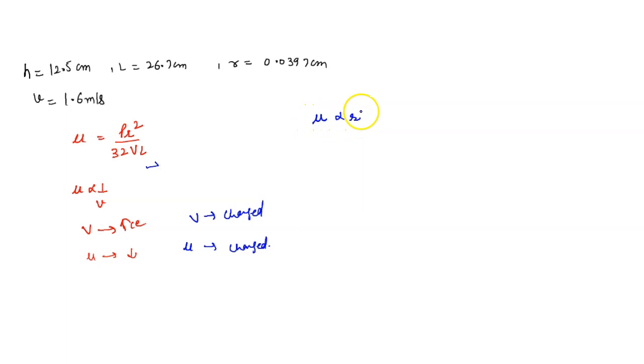So if the tube gets narrow, it means the value of R decreases. As we see, μ is directly proportional to R², and if R is decreasing, it means μ is also decreasing.